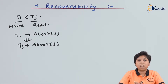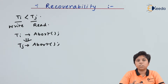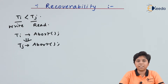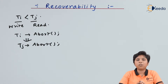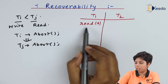To satisfy recoverability for two transactions we need to produce recoverable schedules. A recoverable schedule is one where transactions can be arranged such that the recoverability condition is satisfied. Now let's take an example: transaction T1 is reading the value of A and then modifying the value of A.